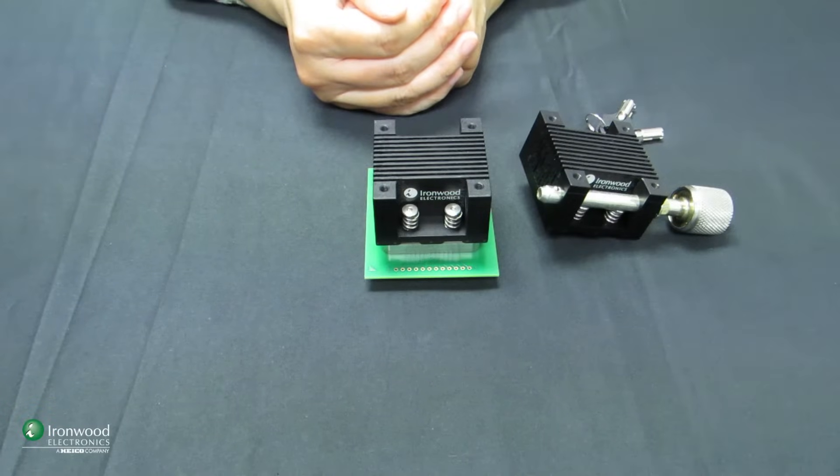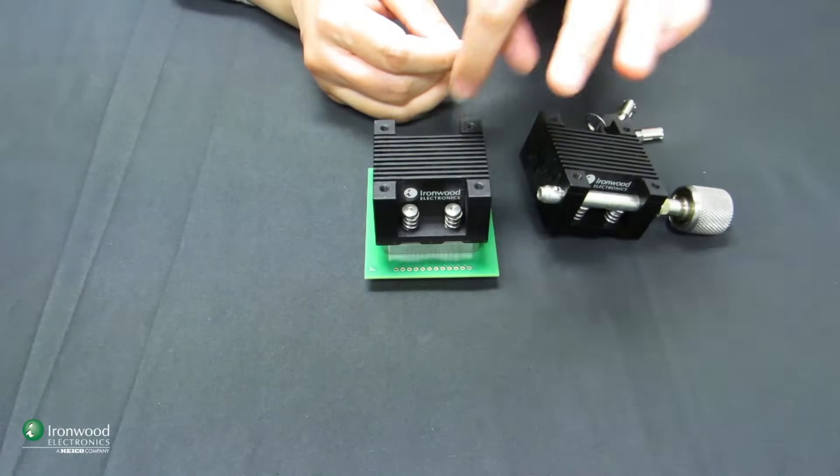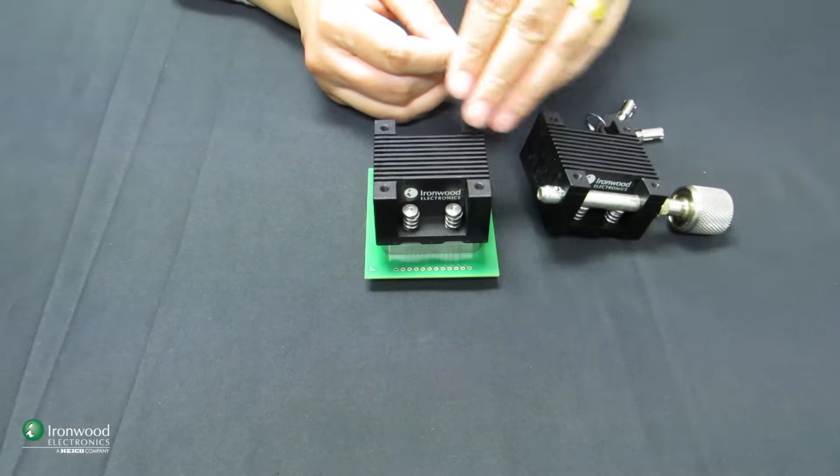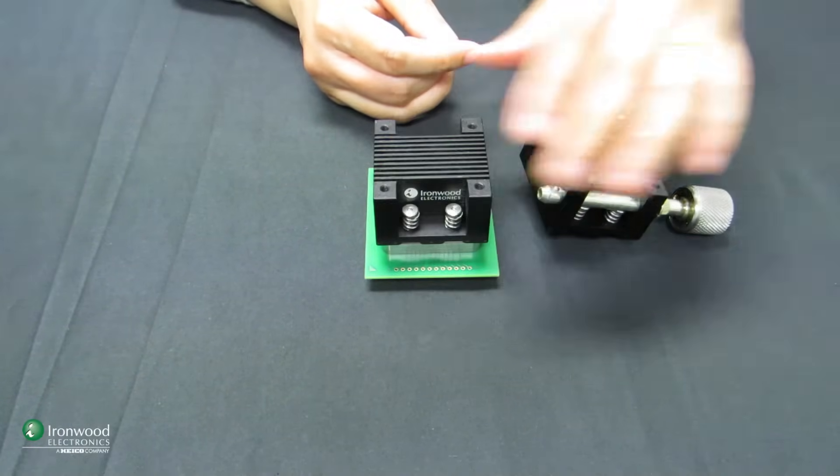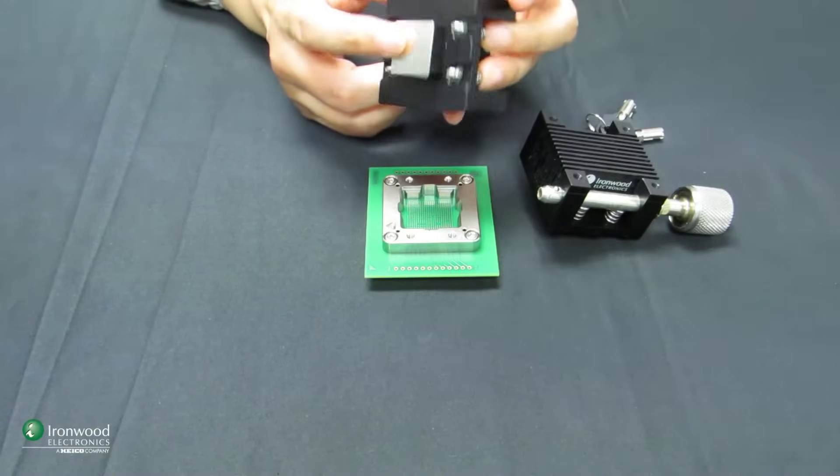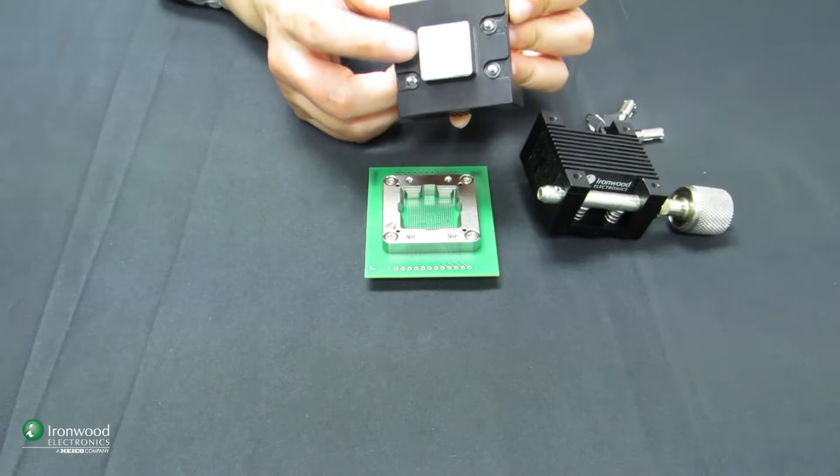The spring force from the heat sink itself will transfer the force applied to the device and the die itself. Meanwhile, the heat sink is attached to what we call thermal interface materials.